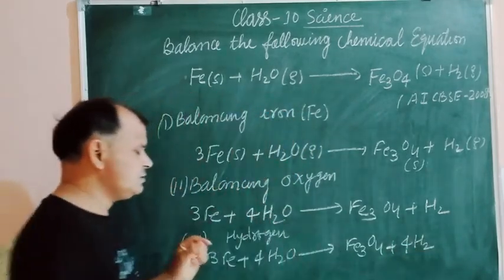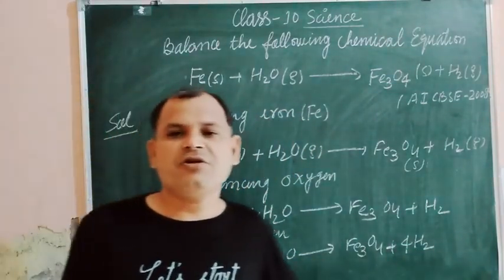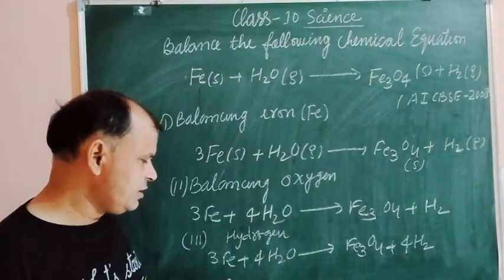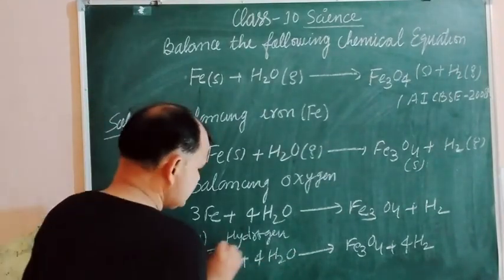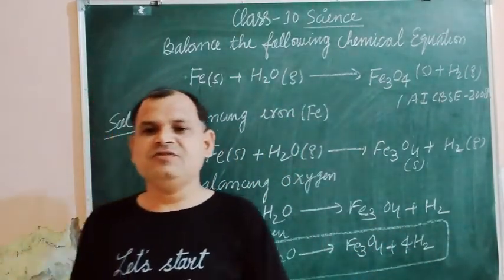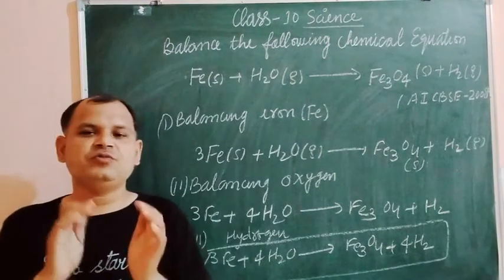Now all parts of right hand side and left hand side products are balanced and equal in number. So this is the balanced chemical equation. Friends, in this way we balance this chemical equation. I hope you got it.